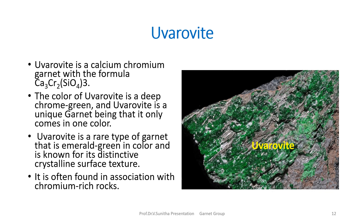Uvarovite can be identified by its bright green color. It is a calcium chromium garnet with the formula Ca3Cr2Si3O12. The color of uvarovite is a deep chrome green, and it is a very unique garnet in that it only comes in one color. Uvarovite is a rare type of garnet that is emerald green in color and known for its distinctive crystalline surface texture. It is often found in association with chromium-rich rocks.